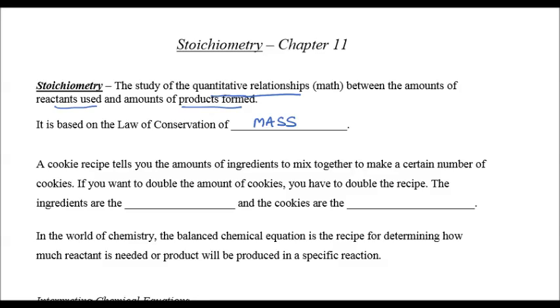A cookie recipe will tell you the amount of ingredients you need to mix together to make a certain number of cookies. If you want to double the amount of cookies, you have to double the recipe. The ingredients are the reactants, and the cookies are the products.